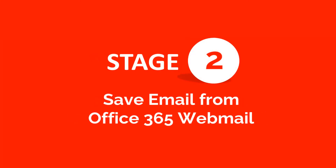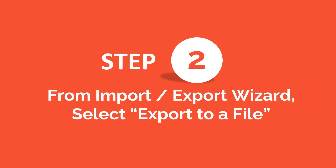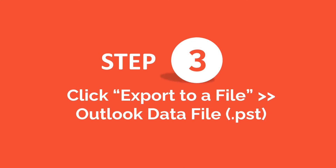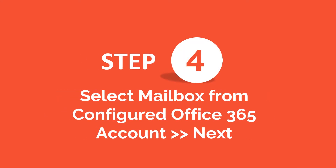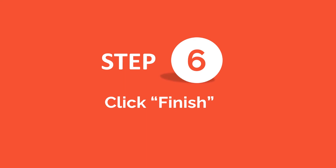Stage two is to save emails from Office 365 webmail. Click File, Open and Export, and choose the Import/Export option. From the Import/Export wizard, select Export to a File, then choose PST. Select the mailbox from your configured Office 365 account, hit Next, select the destination location on your desktop to save the exported PST file, and finally hit Finish.